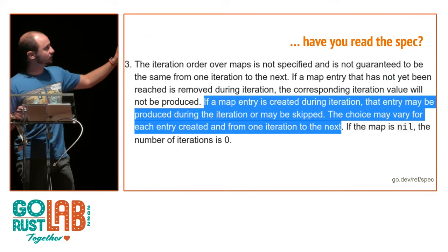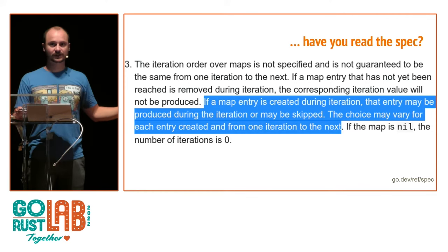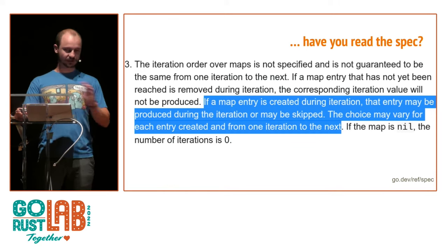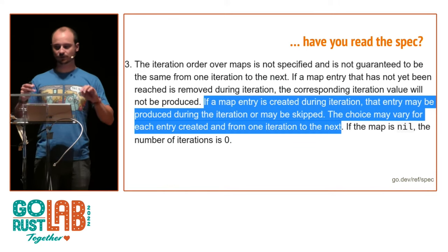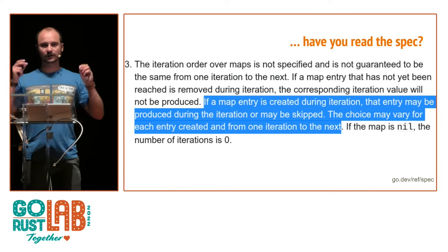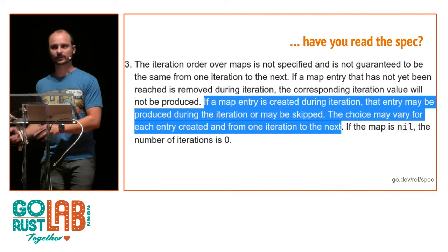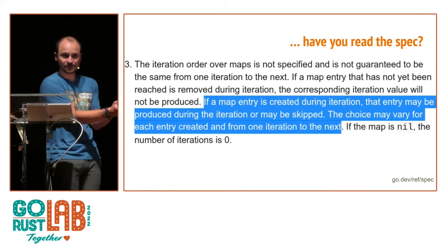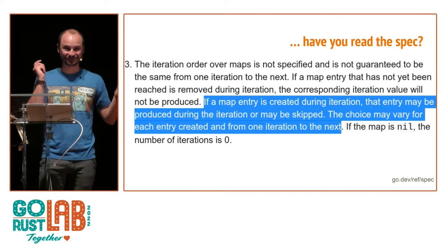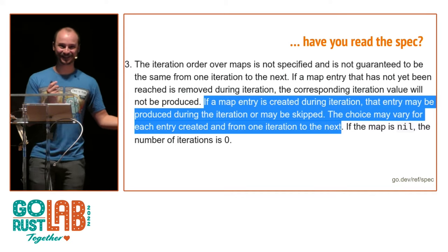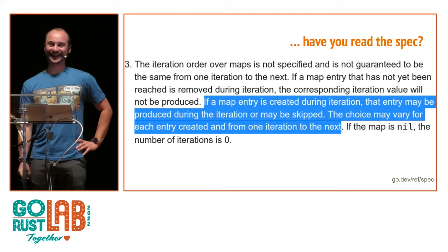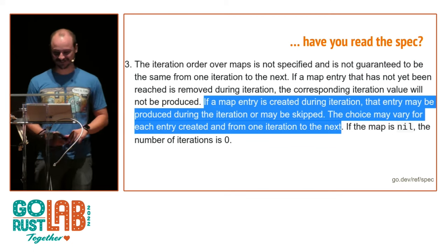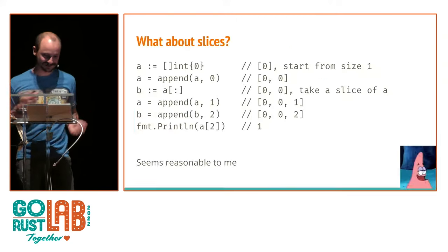Depending on the implementation of Go and how many times you iterate, you might end up seeing an entry you just created in your next iteration. If you create a header that has one character and try to remove the prefix from it, it will crash. If you do code reviews or write Go and see someone changing a map while iterating on it, this is a big no-no. I always advise against reading the spec first — you don't go into a language by reading the spec. You first use the language, have fun with it, and when it hits you in the face, that's when you read the spec.